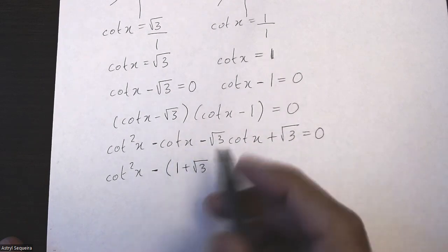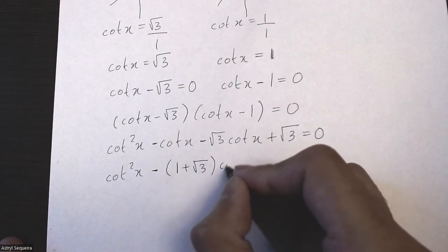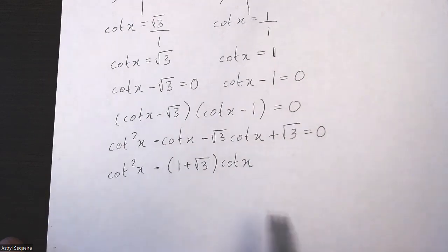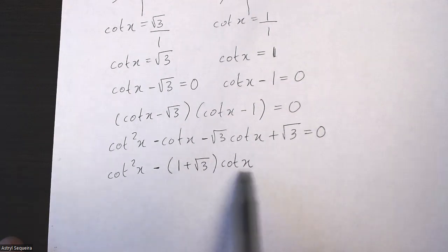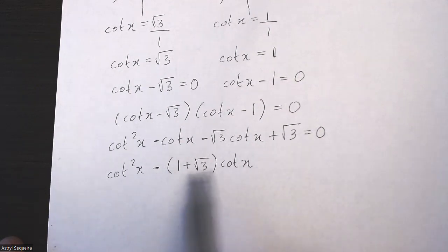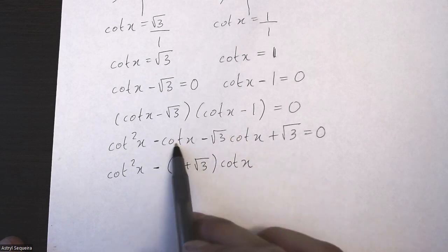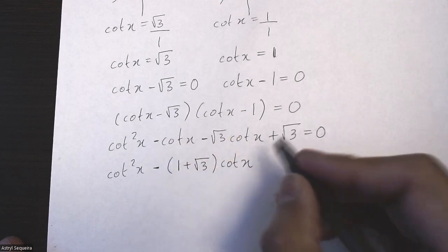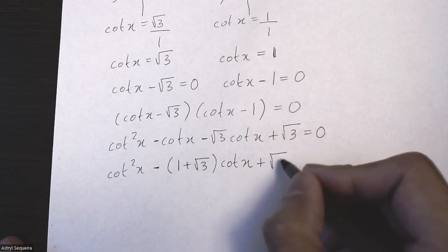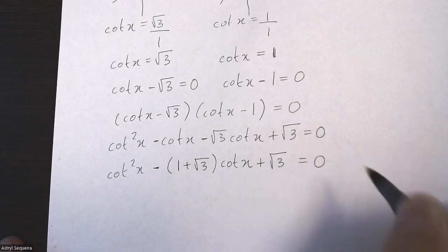I'm also going to factor out the cot, but I'll write it after the bracket because that's how we format our equations. So I factor out a negative and a cot from the two middle terms and I'm left with 1 + √3. At the end, I have +√3 equals 0.